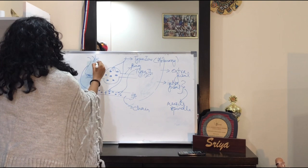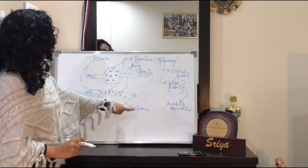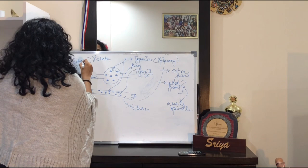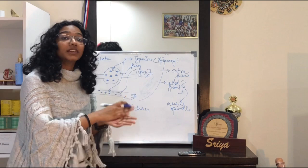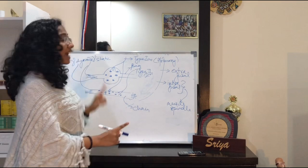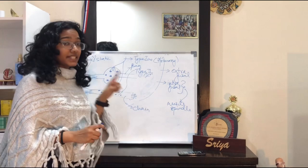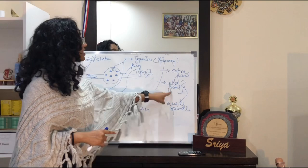Gamma static is received by both nuclear bag and nuclear chain intrafusal fibers, while gamma dynamic is received only by the nuclear bag fibers. Gamma static helps in signaling the length of the muscle fiber — basically the degree of stretch — whereas gamma dynamic covers not only the degree of stretch but also the rate of change of stretch, which is the velocity. I'll explain how the extrafusal and intrafusal fibers coordinate when we study the stretch reflex.